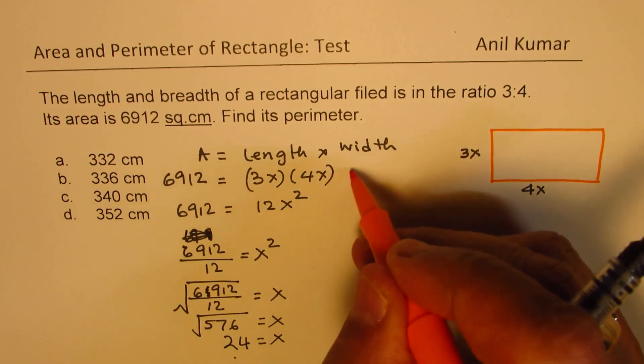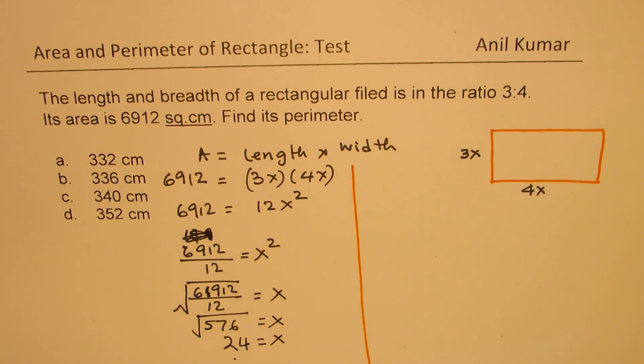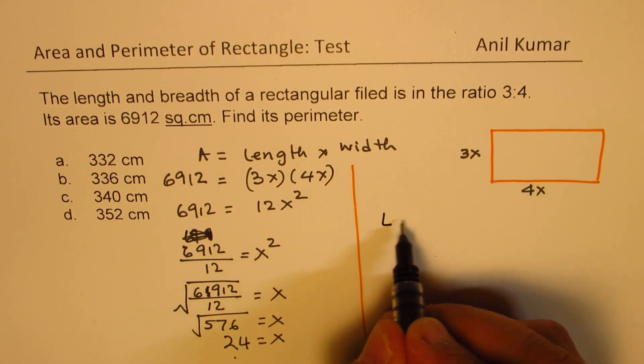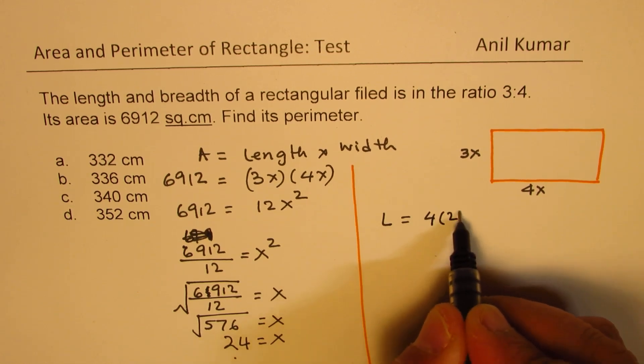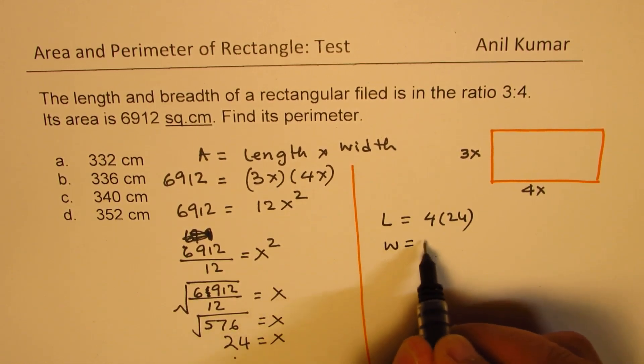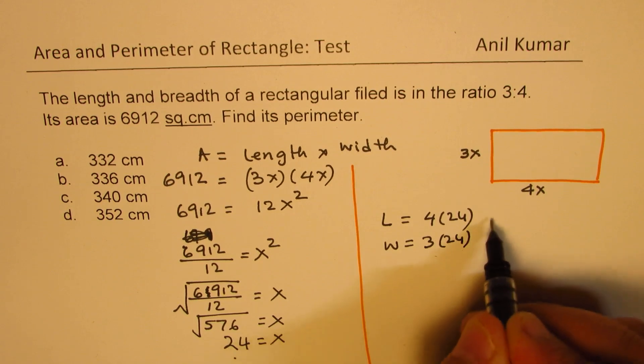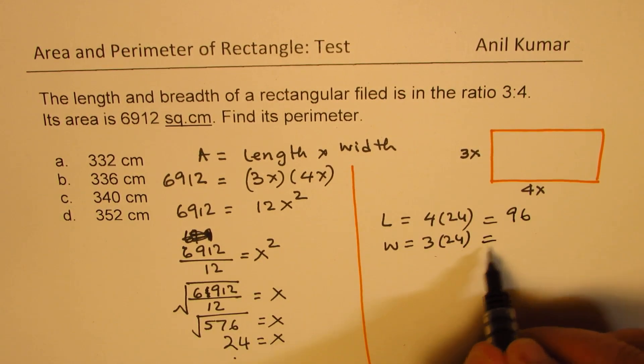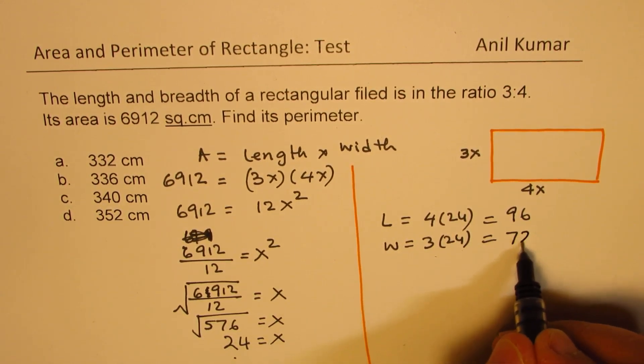Now once you get the value of x, you can substitute and find the sides. So we can say length is 4 times 24 and width is 3 times 24. So that is 96 and this is 72.